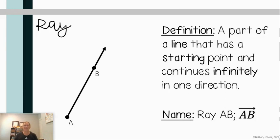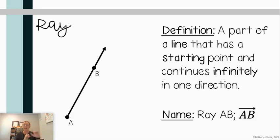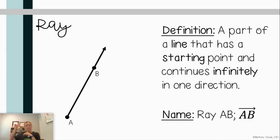Our last term today is a ray. A ray is a part of a line that has a starting point or endpoint and goes infinitely in one direction. The endpoint is A and the ray goes on infinitely past point B with an arrow on the end. We name it ray AB — the order is important. Because you have an endpoint, you must name that first. Also notice the notation: write AB with the symbol above it, but with the arrow pointing toward B only, since A is the endpoint and B is the direction of the arrow.